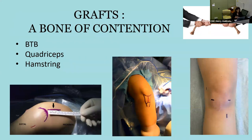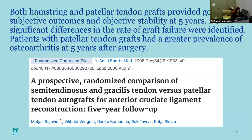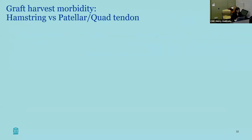The most common grafts we use are BTB, quad, and hamstring, and that's what we'll focus on. There is tons of literature on this. One prospective randomized study with five-year follow-up demonstrated that both hamstring and patellar tendon grafts had good outcomes and objective stability at five years, with no significant differences except patients with patellar tendon grafts had a greater prevalence of osteoarthritis.